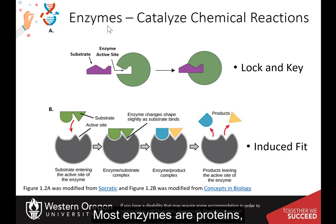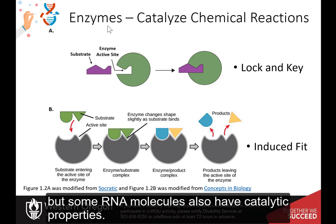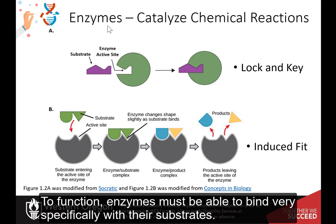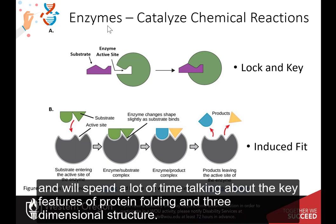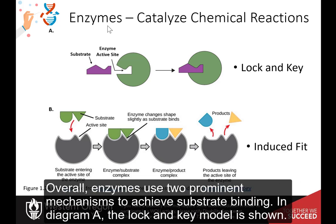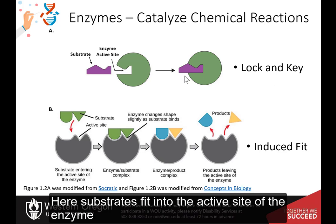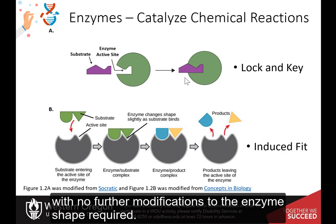Most enzymes are proteins, but some RNA molecules also have catalytic properties. To function, enzymes must be able to bind very specifically with their substrates. We will find that shape is critical to their function, and will spend a lot of time looking at the key features of protein folding and three-dimensional structure. Overall, enzymes use two prominent mechanisms to achieve substrate binding. In diagram A, the lock and key model is shown. Here, substrates fit into the active space of the enzyme, with no further modifications to the enzyme shape required.